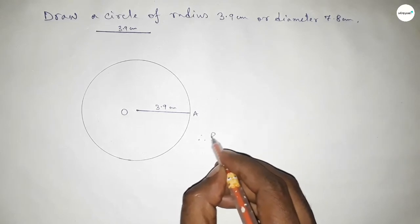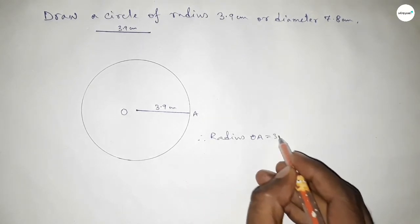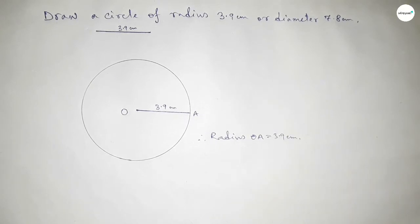Therefore, radius OA equals 3.9 centimeter. That's all, thanks for watching. If this video is helpful to you, then please share it with your friends.